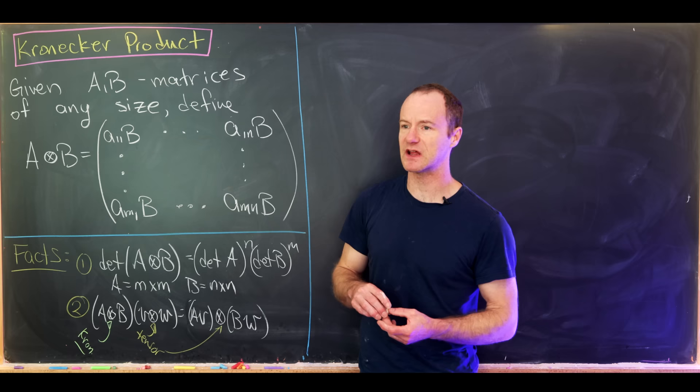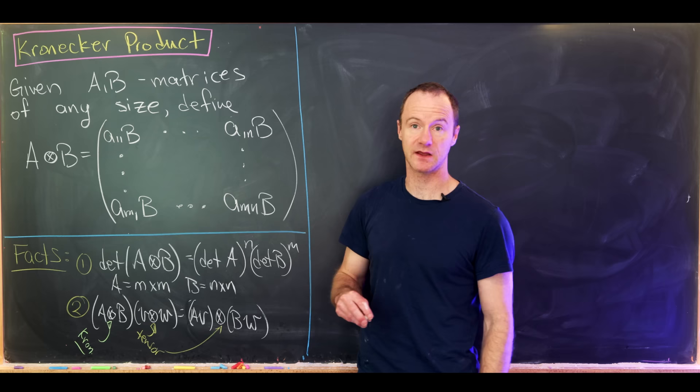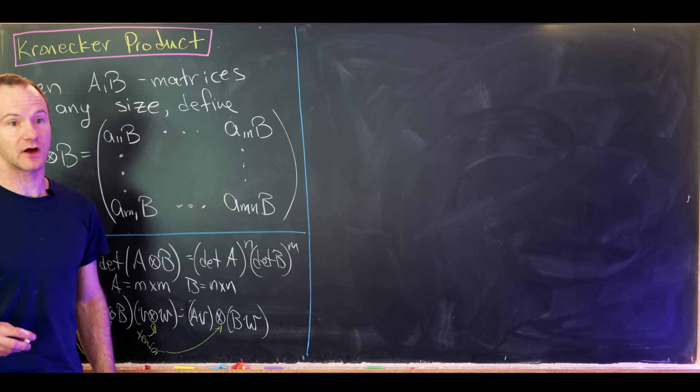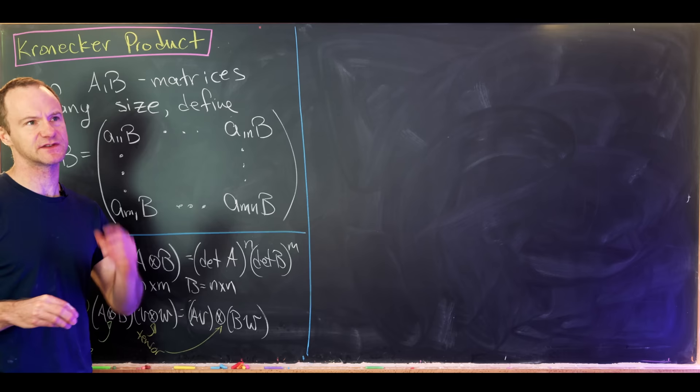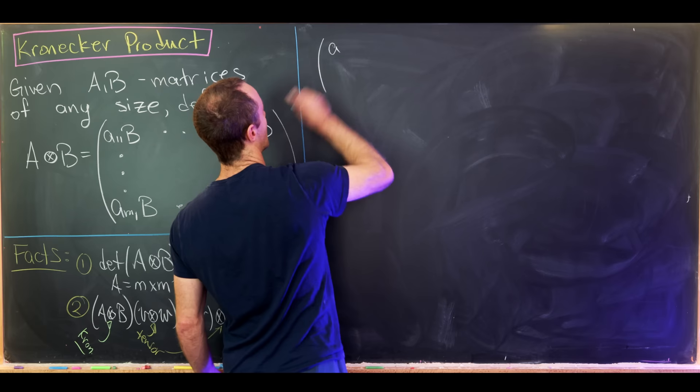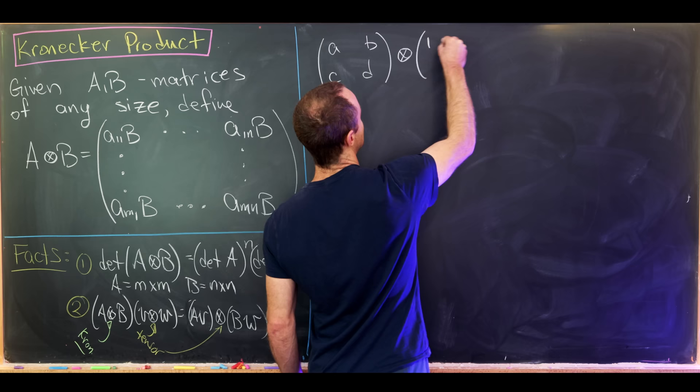Post in the comments if you'd like to see a whole video about the tensor product of linear transformations — I think that might be fun to make. Now let's sketch out a proof of the determinant result. We won't work out all the details because it gets tricky with all the indices, but we'll look at a 2×2 case to motivate the result. So let's look at [[a, b], [c, d]] Kronecker product with the identity matrix [[1, 0], [0, 1]].